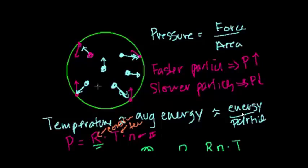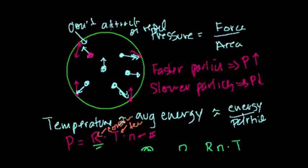So they don't attract or repel each other. Because let's say they attract each other. Then as you increased the number of particles, maybe they'd want to not go to the side, maybe they'd all gravitate towards the center a little bit more if they did attract each other. And if they did that they would bounce into the walls less and the pressure would be a little bit lower. So we're assuming that they don't attract or repel each other.